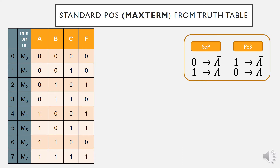Let's see how we can construct a product of sum term, which we call a max term, from a truth table. We already know how to construct sum of product terms from the previous lesson. Just to recap: we use sum of product terms when the output is high. In contrast, for product of sum form, we use it when the output is low.